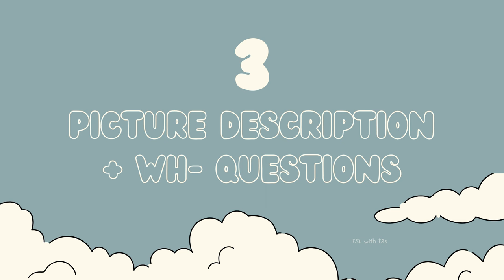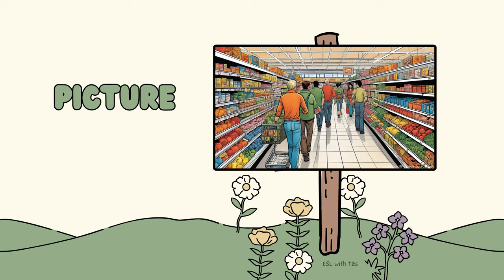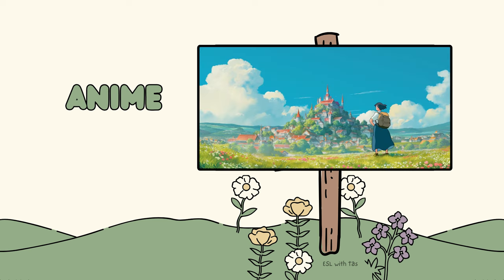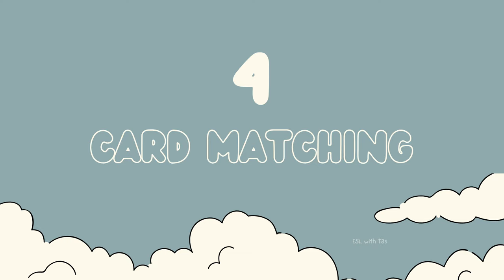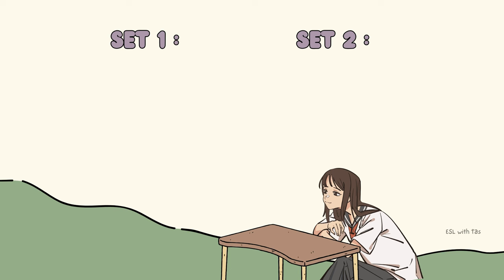Third is picture description featuring the WH questions. Show the student a detailed picture — it could be an actual photograph or a picture on your phone. I personally like to go with anime landscapes because they're so pretty but also very detailed and can help boost their imagination. The student must describe the picture in as much detail as possible, using the WH questions as a guide.